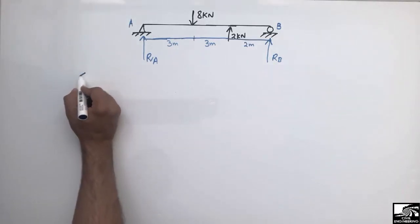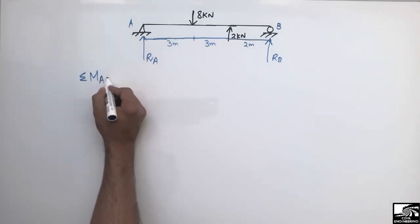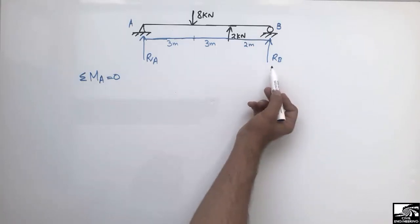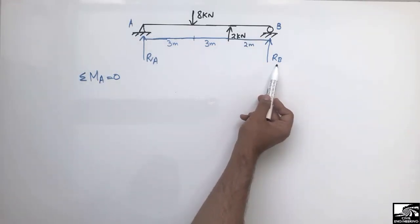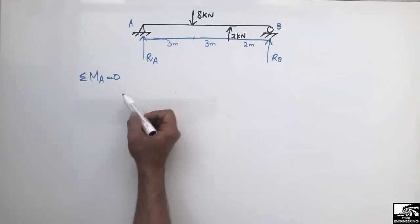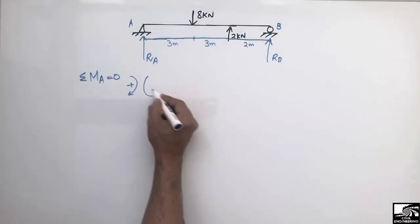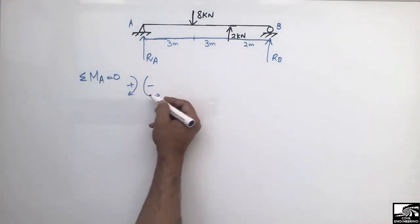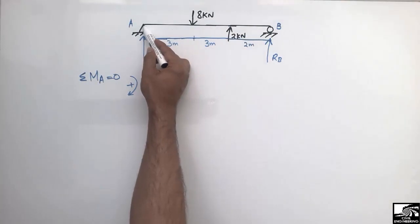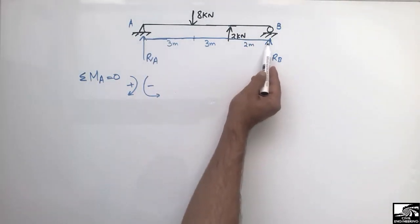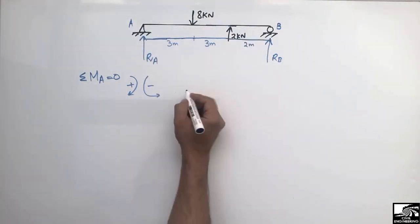The first step is to take the summation of moments. Let's suppose the summation of moment at point A is equal to zero. We can find the support reaction RB by taking the summation of moments at A equal to zero. We assume clockwise moment is positive and anti-clockwise is negative. RB is acting anti-clockwise around point A, so it will be negative.